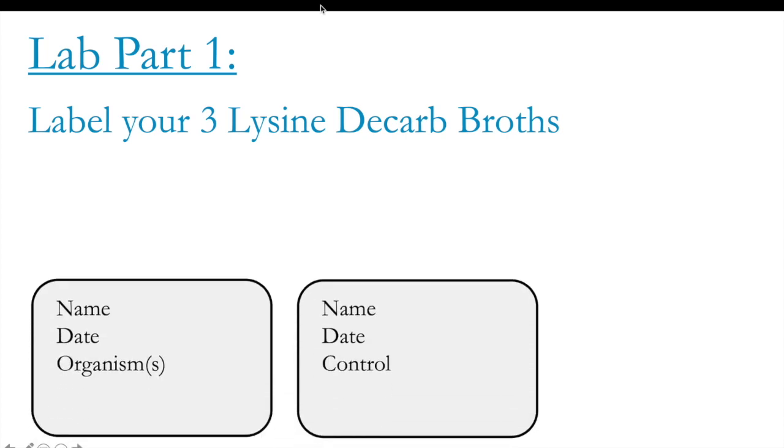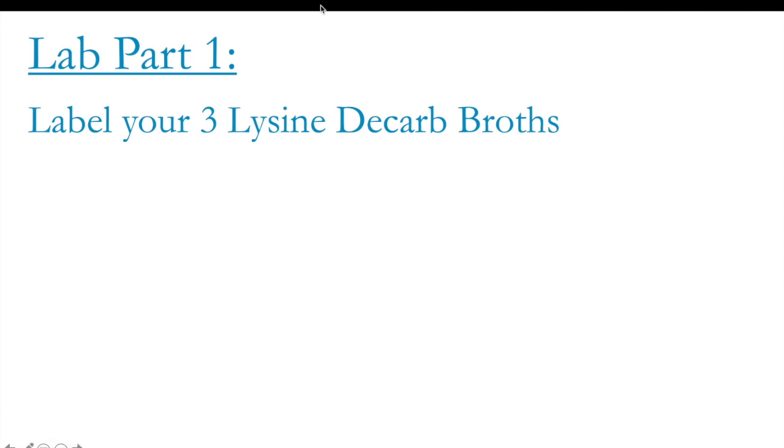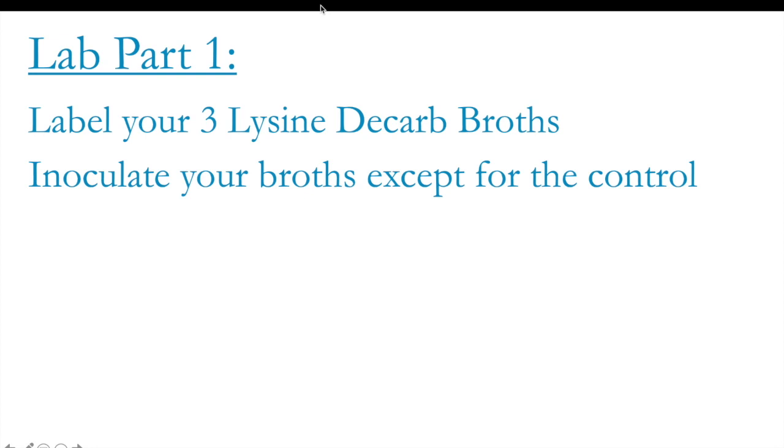Now that you have all your items gathered, first thing you'll want to do is label your 3 lysine decarboxylase broths. Two of them with the organisms that I've mentioned earlier, and one being your control. Once you have labeled all of them, you can then proceed to inoculate your broths, excluding the control for obvious reasons.